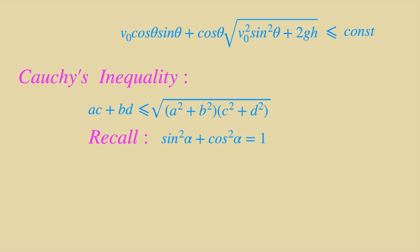So let's try to do the magic with Cauchy's inequality. Let a equals sine theta, b equals cosine theta. So the first term turns to be square root of sine squared plus cosine squared, and that's the first constant that we need.